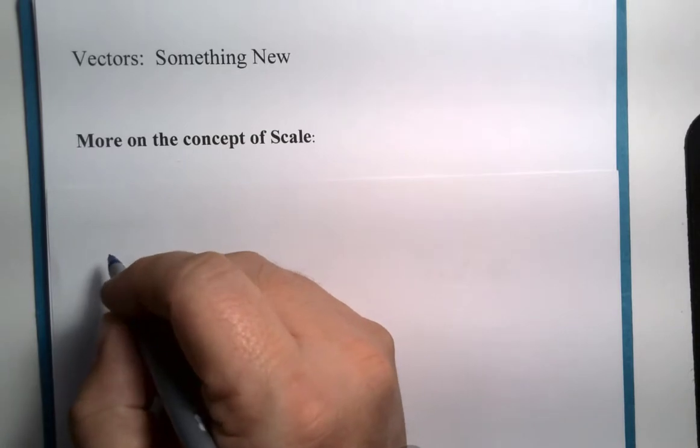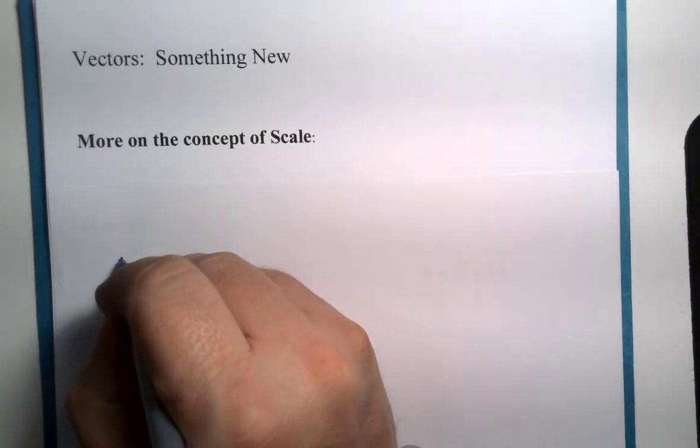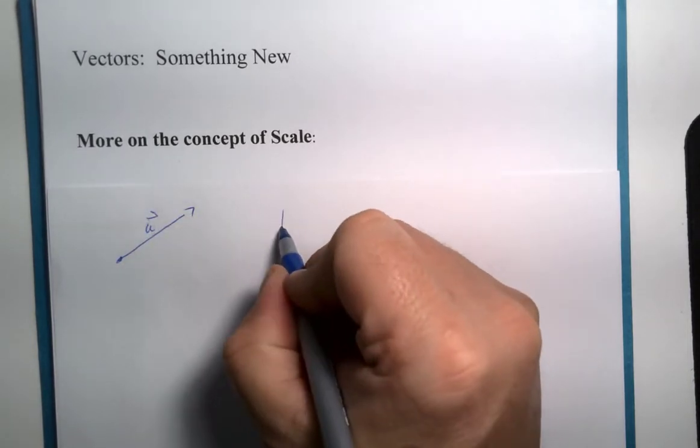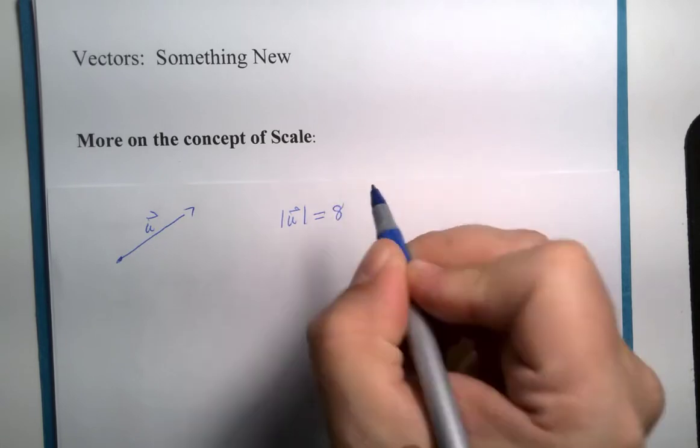As a reminder to you all, if we had, for example, this vector u here, and the magnitude of u was, let's say, 8,